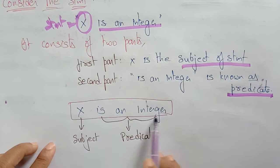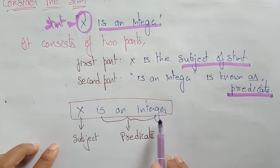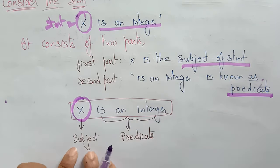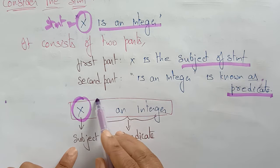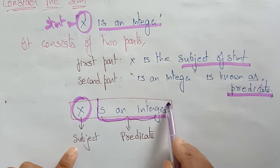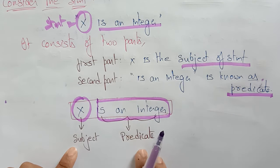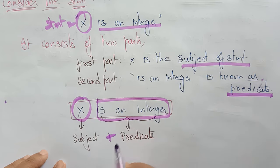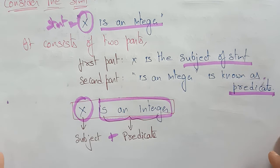So in 'X is an integer': X is the subject, and 'is an integer' is the predicate. The statement is divided into two parts: subject plus predicate. Thank you.